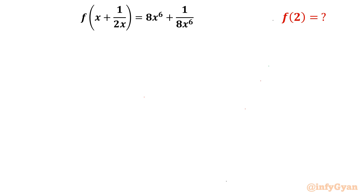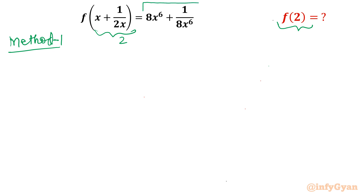Method number 1 is the easiest and simplest method once you click the trick. Since we have to find f(2), I am going to put 2 and evaluate 8x⁶ + 1/8x⁶. So let us get started by putting the equation x + 1/2x = 2.